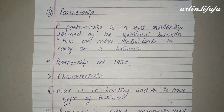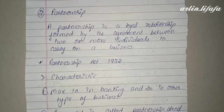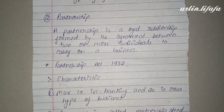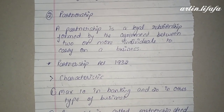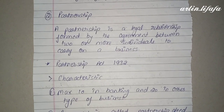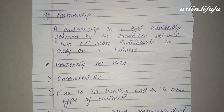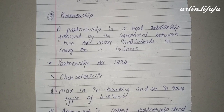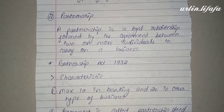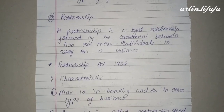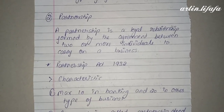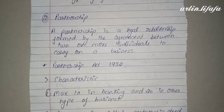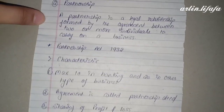Partnership is a legal relationship formed by agreement between two or more individuals to carry on a business. इसमें दो या दो से ज़्यादा लोग एक agreement बना लेते हैं और उसके चलते एक business start करते हैं। इसके अंदर Partnership Act 1932 लागू होता है।